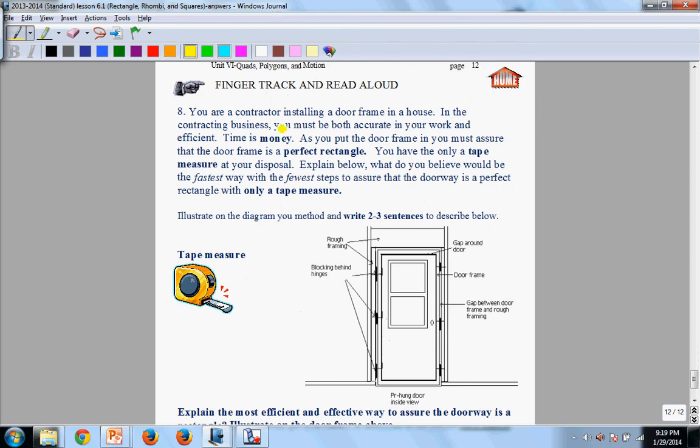Number 12, it says you are a contractor building a door frame. In the contracting business, you must be both accurate in your work and efficient. Time is money. The faster you do something, the more efficient you are, the more you get done, the more you get paid. As you put in a door frame, so your goal is to put in a door frame, install a door frame here, you must assure the door frame is a perfect rectangle with perfectly squared corners.